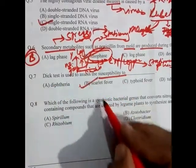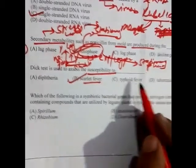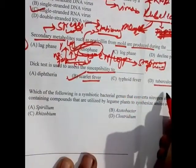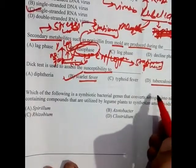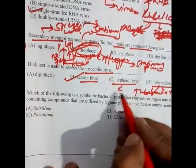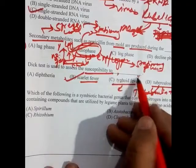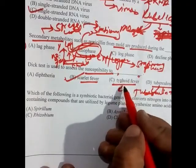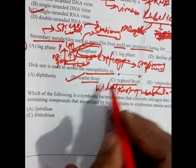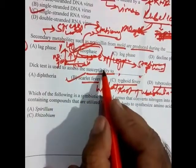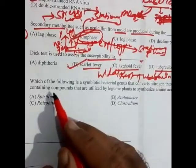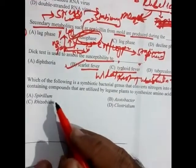Question 7: The Dick test is used to assess susceptibility to scarlet fever. For TB there is the tuberculin skin test. Also remember: typhoid fever is detected using the Widal test — these are very commonly asked questions in microbiology. The answer here is the second option.